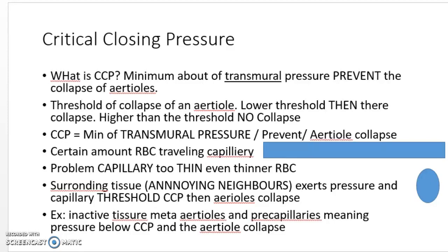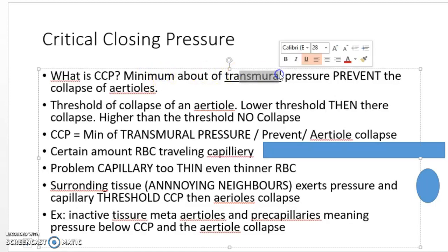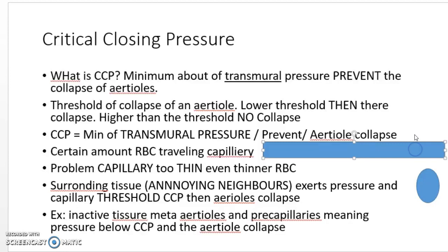What is critical closing pressure? Critical closing pressure is basically the minimum amount of transmural pressure — meaning pressure between the walls. You can see over here, this is our capillary. This will be the minimum amount of transmural pressure exerted to prevent the arterial from collapsing. Arterials can easily collapse, but this critical closing pressure is the minimum amount to prevent that from happening.